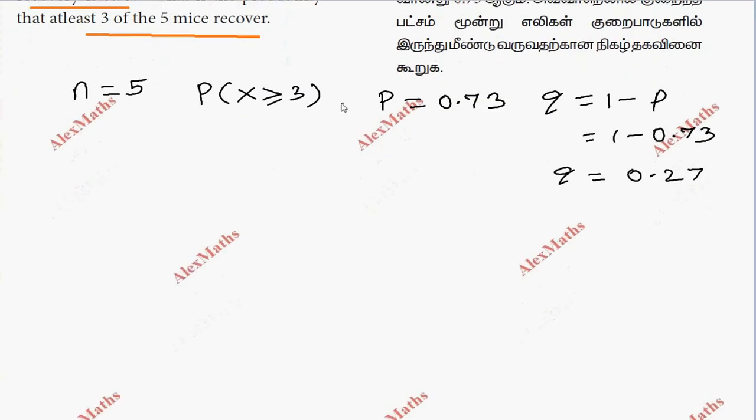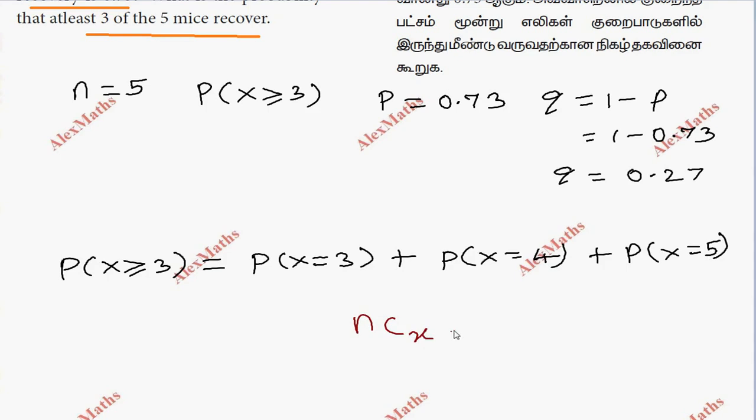At least three of them means P of X greater than or equal to three. Remember, at least three means three or four or five. Now we apply the binomial formula: n choose x times p to the power x times q to the power n minus x.